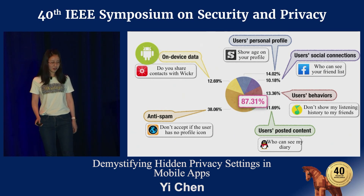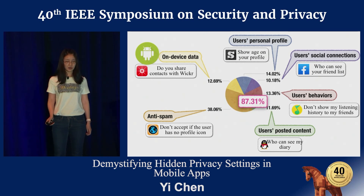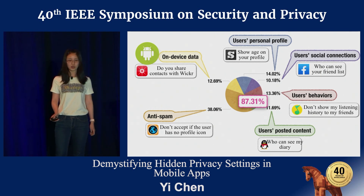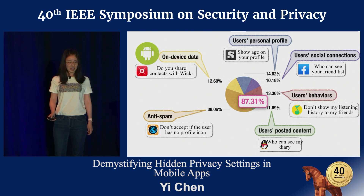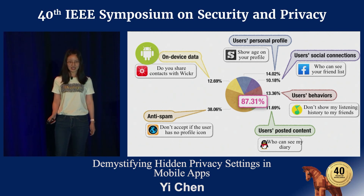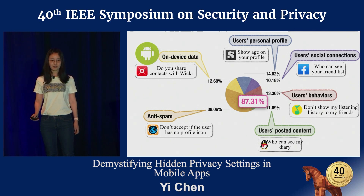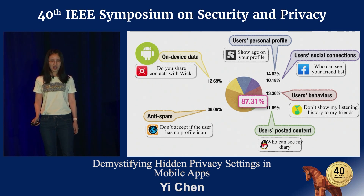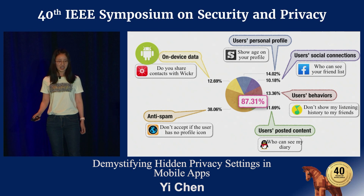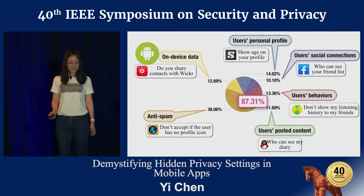It is important to note that in all the categories, only on-device data can be protected by Android system permission. For the other 87% of privacy, they can only be controlled by privacy settings. So in our study, we want to understand, besides the familiar privacy data protected by Android system permission, whether people really care about other privacy protected by privacy settings.